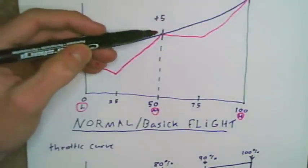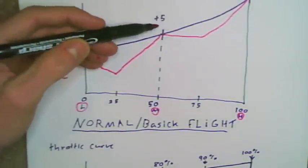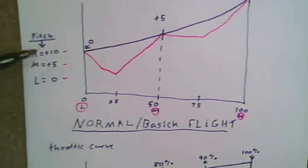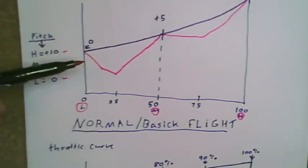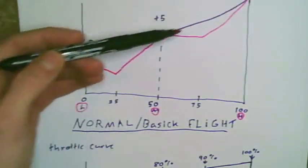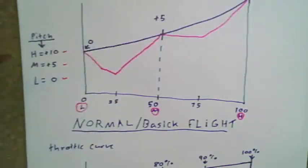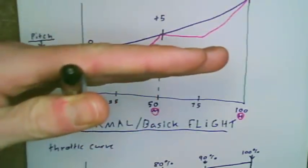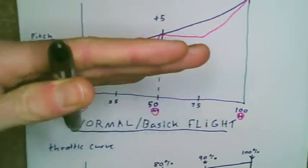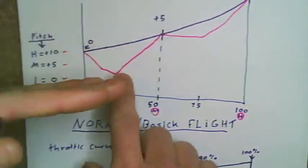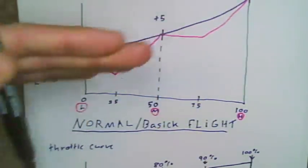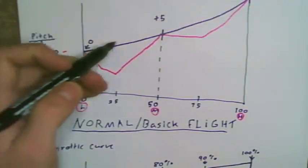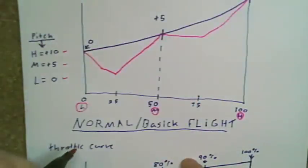We're going to increase this point to have a plus five at mid stick and a plus ten at the top. The goal of your pitch curve is getting a nice smooth movement. You want the pitch of the blade to move nice and evenly — with an unsmoothed curve your pitch is going to be moving all over the place. So after we get our zero, plus five, and plus ten set...